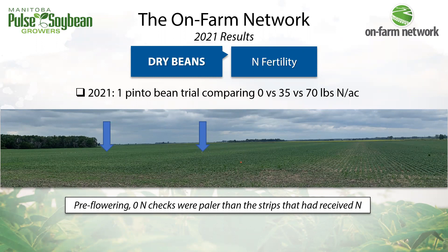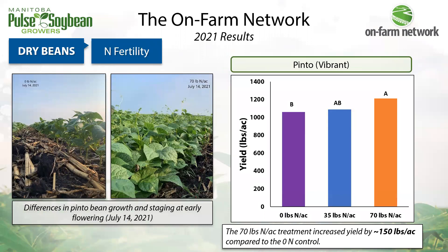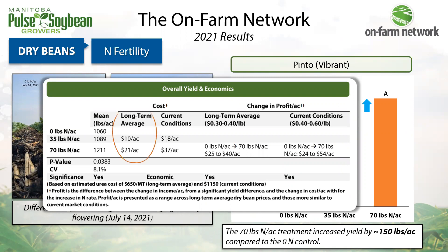Moving into nitrogen fertility — we had one N trial in pinto beans in 2021. At later vegetative stages, there were visual differences where the zero N check strips were paler than adjacent strips with nitrogen applied. These differences persisted through flowering, where nitrogen showed improved growth vigor and even advanced staging at the highest N rate. This carried through to a significant yield difference where the highest rate — 70 lbs per acre — increased yield by about 150 lbs per acre compared to the zero N check. Assuming urea costs, the yield increase was profitable even at black bean sale prices as low as $0.30 to $0.35 per pound.